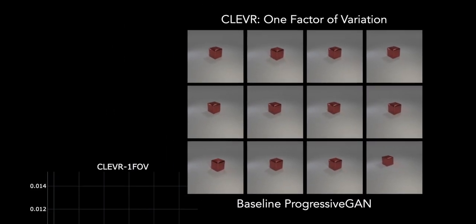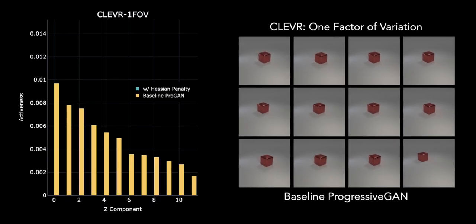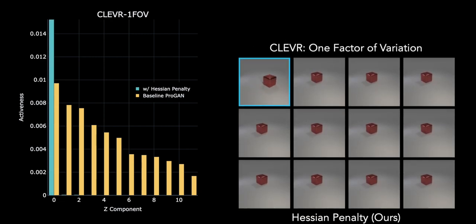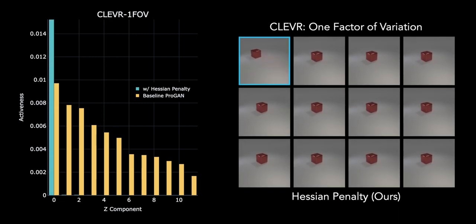Returning to our progressive GAN, we can plot all 12 of its activeness scores. Note that they're all relatively uniform. That means G depends on all of them. Here's what the activeness scores look like for model trained with the Hessian penalty. All but a single component is turned off by our method.